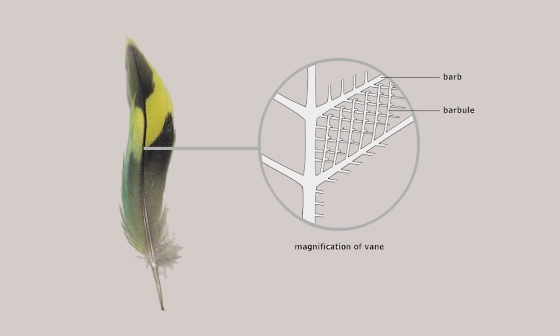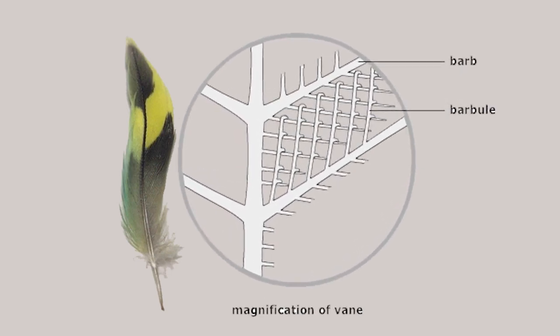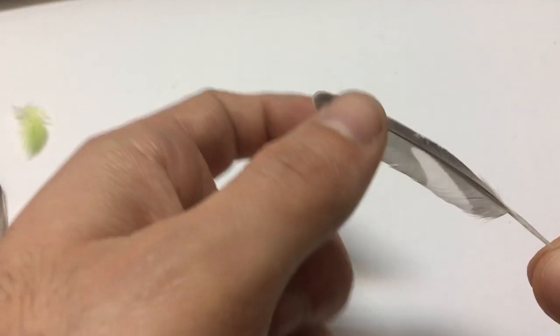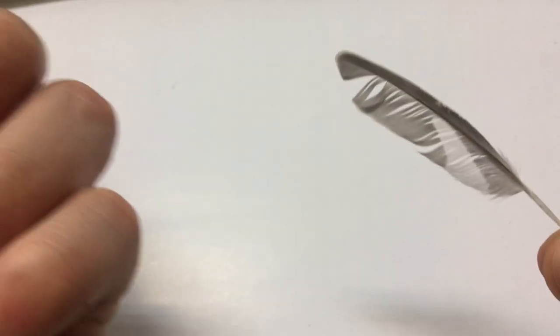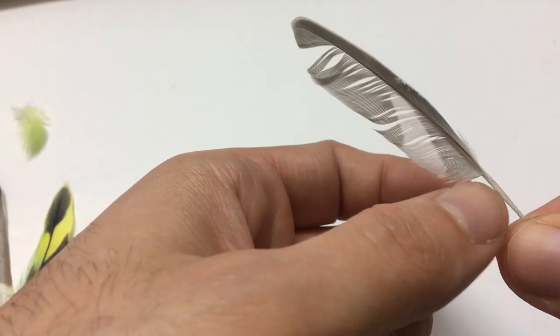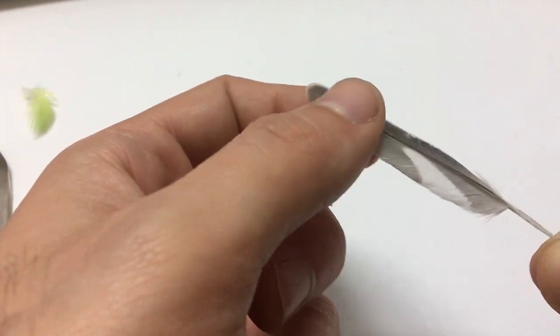Barbules have hooklets which hook the barbules together like a zipper, forming a tight, smooth surface. These maintain the shape of the feather — without these strong linkages, the feather would not be able to withstand the air resistance during flight. The barbs or hooklets may become separated from each other, but the bird can reattach them while preening.